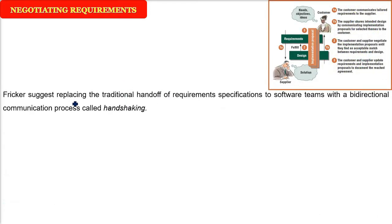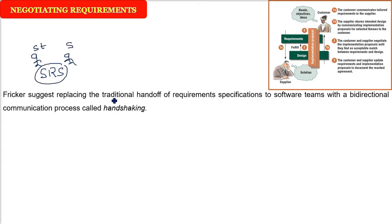Freaker actually suggested that there was a traditional handoff method. Now let us replace it with a different kind of method. Previously we used to make the SRS — software requirement specification — both parties would sign it and that would be the bible guiding the whole software process. Now Freaker is saying that the traditional handoff system should be replaced by handshaking — there has to be a both-way, full-duplex or bi-directional communication. He termed it as handshaking.